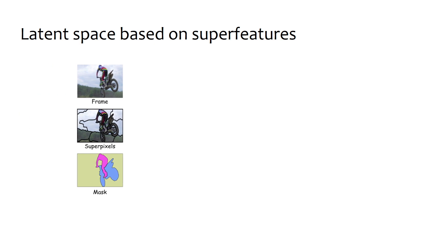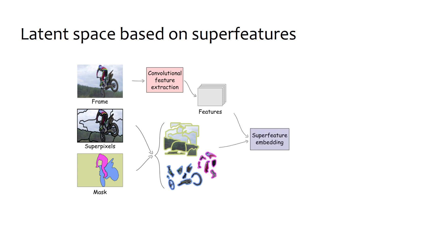In a nutshell, given a video frame, its super pixels and object masks, we extract convolutional features and embed them using the object super pixels. This process gives rise to a latent space where the super features from the same objects are clustered together.